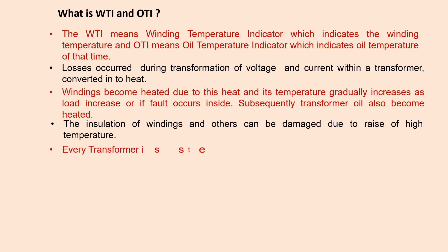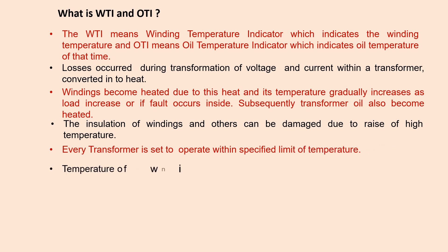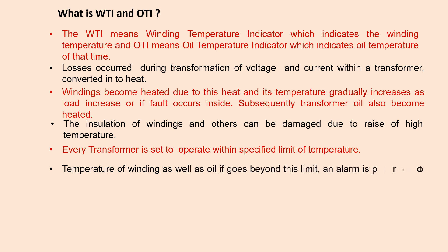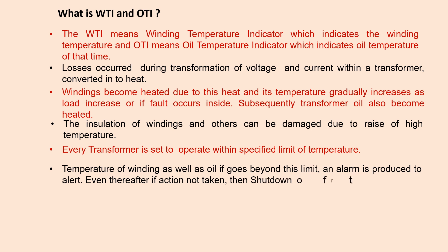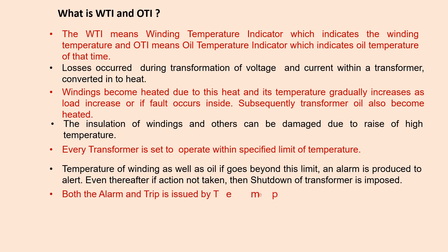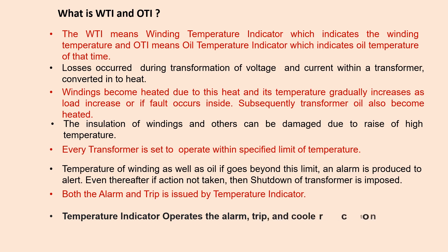The insulation of the winding and other components can be damaged due to a rise in high temperature. Every transformer is set to operate within a specified limit of temperature. If the temperature of the winding as well as the oil goes beyond this limit, an alarm is produced to alert. If action is not taken thereafter, shutdown of the transformer is imposed. Both the alarm and trip are issued by the temperature indicator, which also operates alarm, trip, and cooler control contacts.